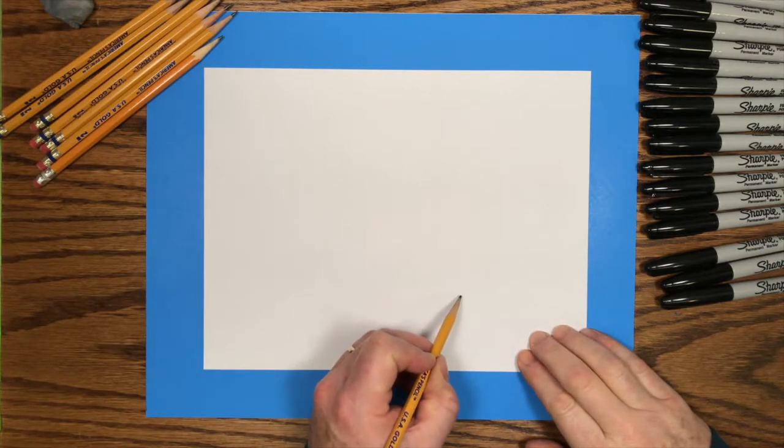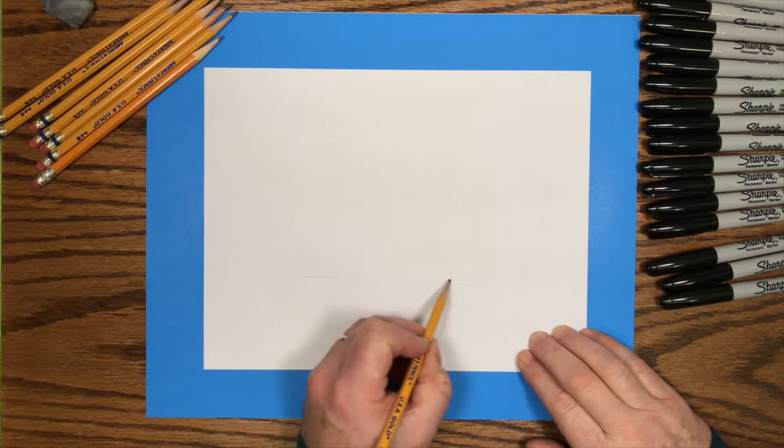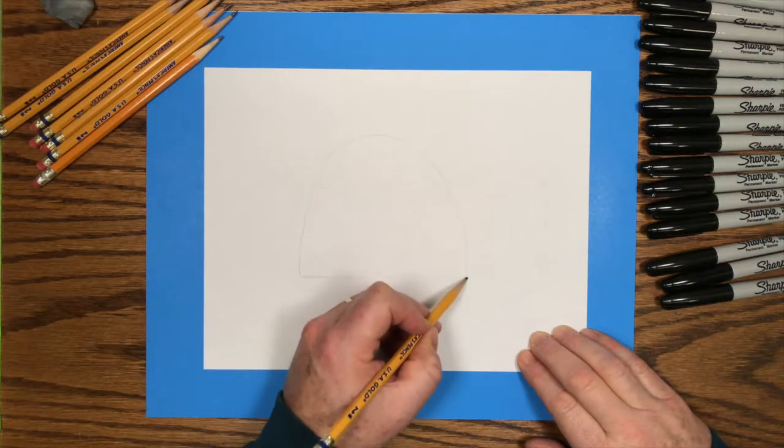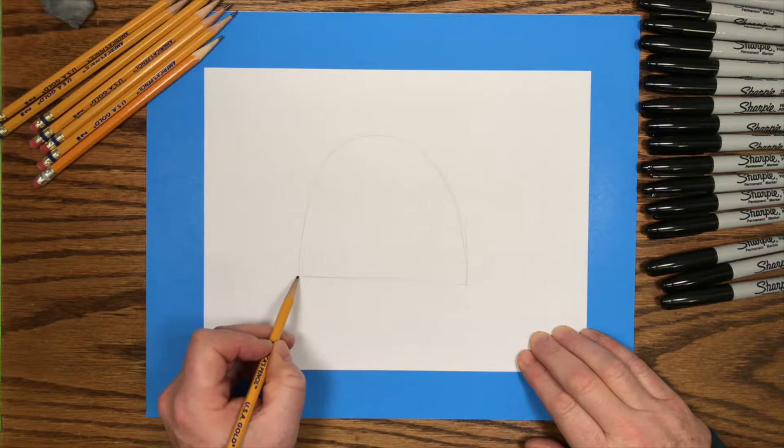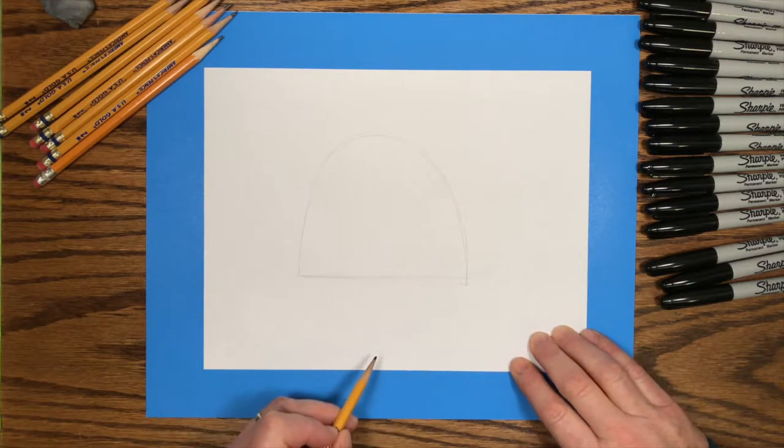We'll start with a straight line from side to side, and then a big bump on top of that. This is the turtle shell. So a straight line and a big bump on top.